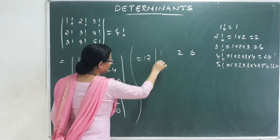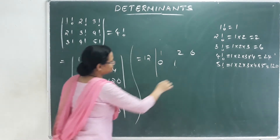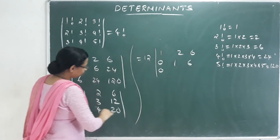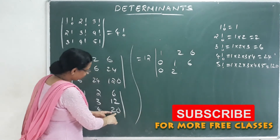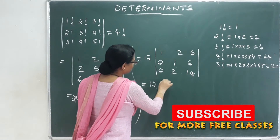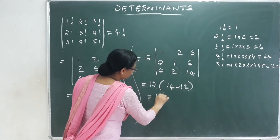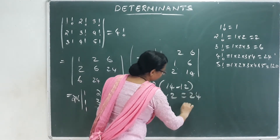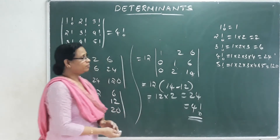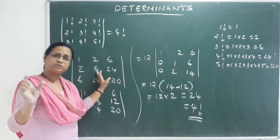How do you see this? This is subtracted: 0. 3 minus 2 is 1. This is 12 minus 6. This is 1 minus 1, which is 0. This is 4 minus 2, which is 2. This is 20 minus 6, which is 14. So 12 into 14 minus 12 — that means 12 into 2 is equal to 24. 24 means 4 factorial. That's how we can determine the expansion simply.